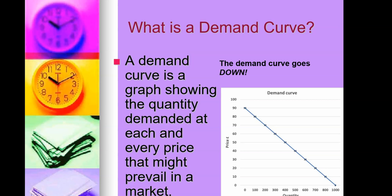For example, on the price side, if you see ninety dollars and scroll straight down, the quantity demanded is essentially zero. But if you go all the way down to ten dollars on the price side, then you have about eight hundred items being sold. This is the demand curve.